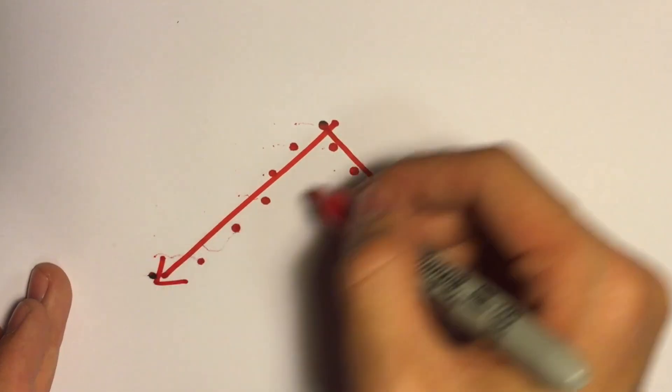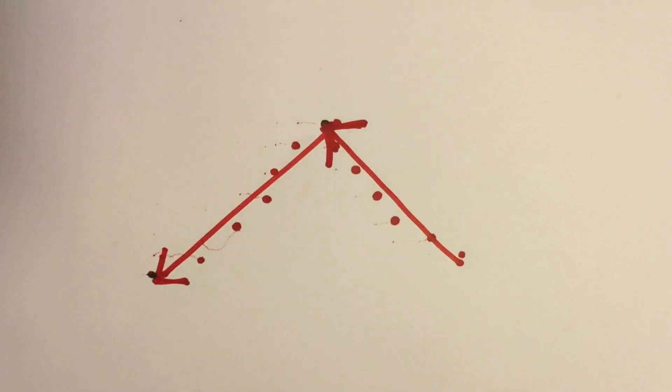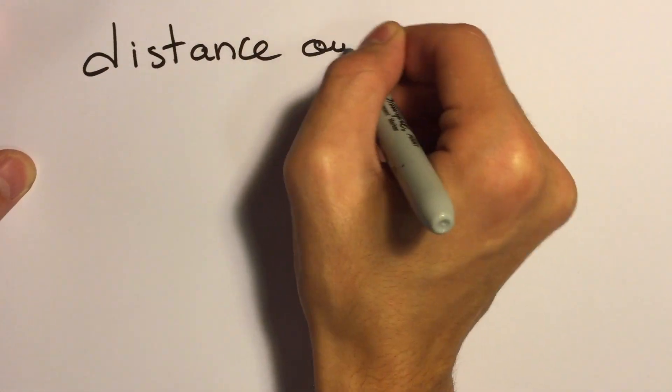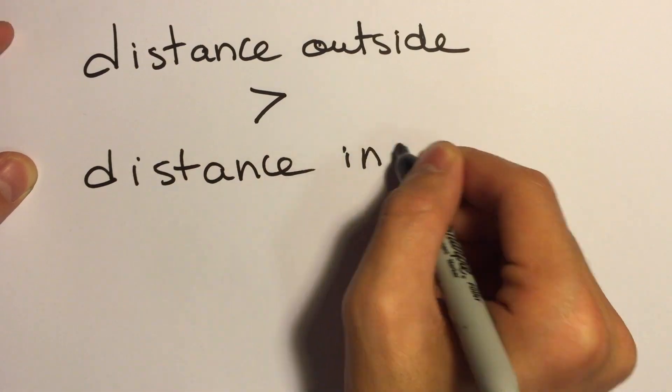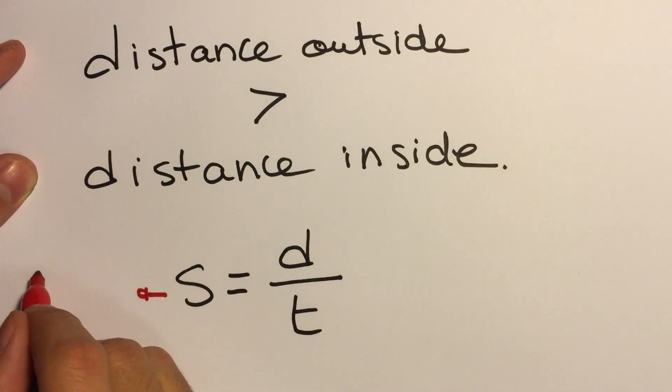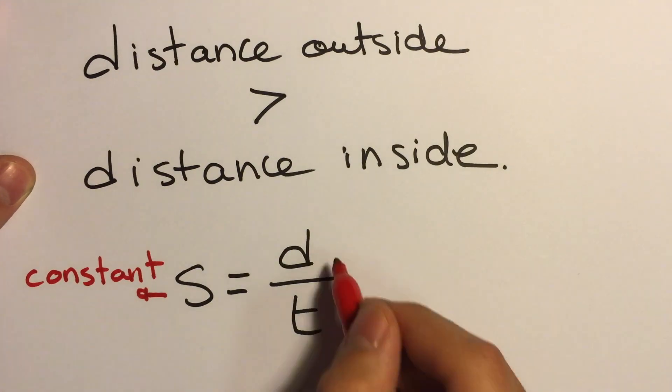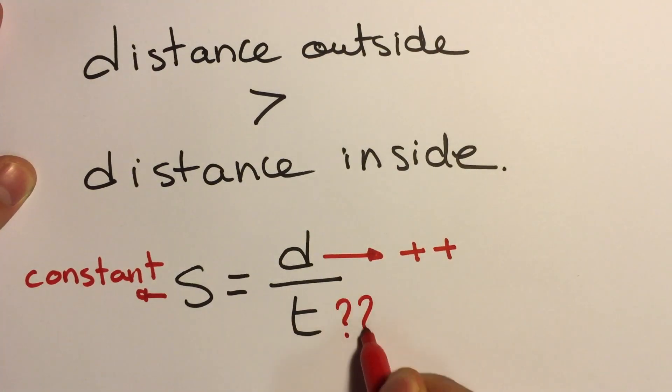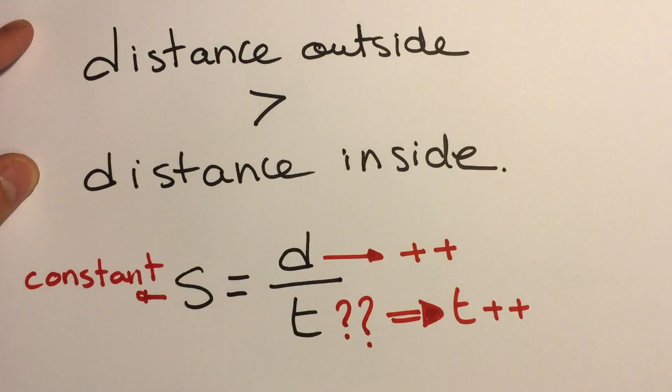And that's how the light appears for someone who is outside the train. The distance travelled by light when the train is viewed from the outside is bigger than the distance travelled for a person who is inside the train. But the speed of light is the same for all observers, and if the distance travelled by light increases, time has also to increase.